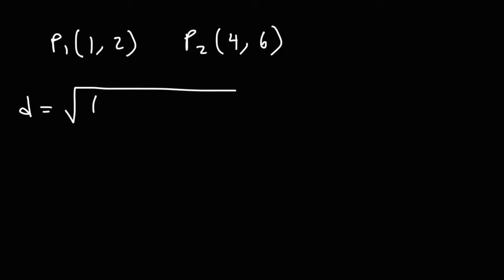And here it is. D is equal to the square root of x2 minus x1 squared plus y2 minus y1 squared. Now, the first thing we need to do is identify the coordinates. This is the x-coordinate, and this is the y-coordinate. And since that's the first point, we're going to call it x1, y1.